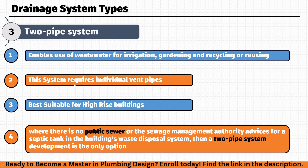This system requires individual vent pipes and is more suitable for high-rise buildings and when there is no public sewer. Where there is no sewer line near the building, or the sewage management authority advises a septic tank, you have to build a septic tank. In that case, the two-pipe system is the only option.